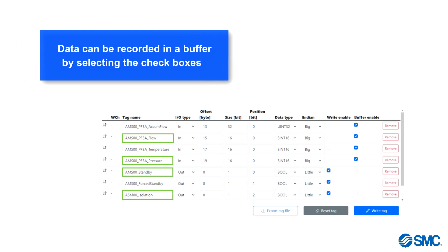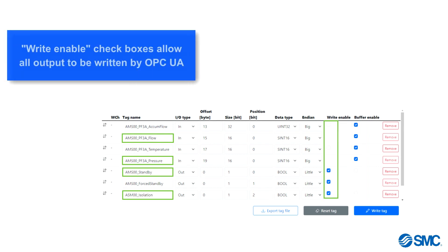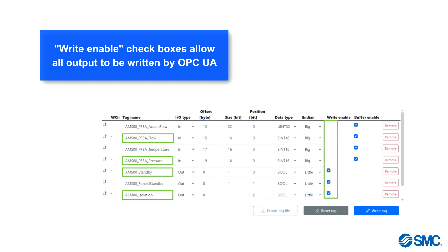When selecting the data required, we have the option to record this in a buffer. Ticking the checkboxes allows for data to be stored in the configured buffer for faster sampling rates. The right enable checkboxes will allow any outputs to be written by OPC UA.